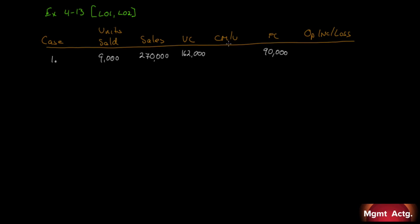Starting with contribution margin per unit: sales of $270,000 minus variable costs of $162,000 gives us a total contribution margin of $108,000. Dividing by 9,000 units gives us $12 contribution margin per unit. Then, contribution margin of $108,000 minus fixed costs of $90,000 gives us operating income of $18,000.